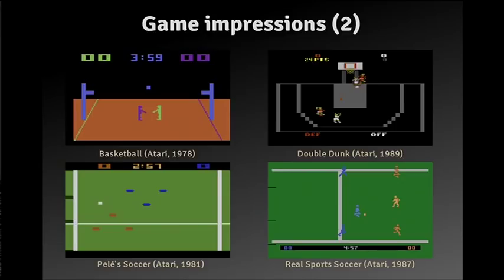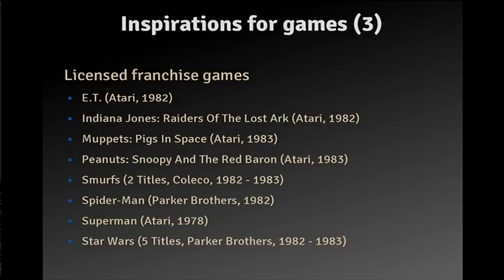The early games were really from the early days. Double Dunk is more sophisticated, but the most interesting comparison is soccer. In Pelé Soccer you have four players — three field players and a goalie — and the field players always stay in formation so you move all of them at once. Six years later they got more sophisticated: the other players were controlled by the computer, you just controlled one player, and there were six field players and one goalie.